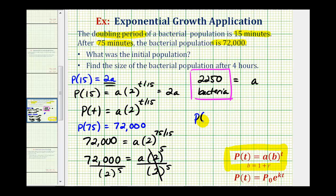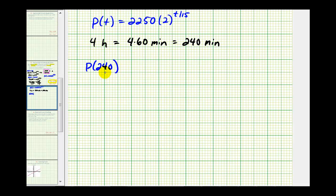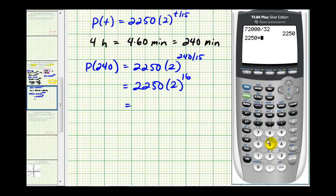This gives us that P(t) must equal 2250 times two raised to the power of t divided by 15. To find the size of the population after four hours, we just need to convert four hours to minutes and then evaluate the function. Four hours equals 240 minutes, so we need to find P(240). Since 240 divided by 15 equals 16, we have 2250 times two to the sixteenth, which gives us 147,456,000 bacteria after four hours.